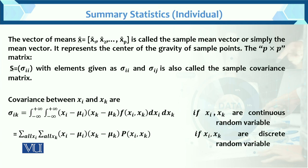Now for summary statistics — in univariate we deal with a single variable. The vector of means x-bar = (x-bar_1, x-bar_2, ..., x-bar_p) is called the sample mean vector, or simply the mean vector. It represents the center of gravity of the sample points.